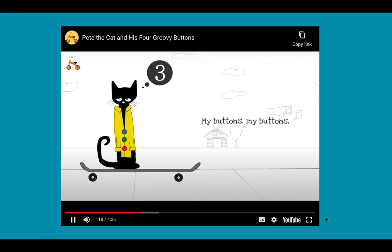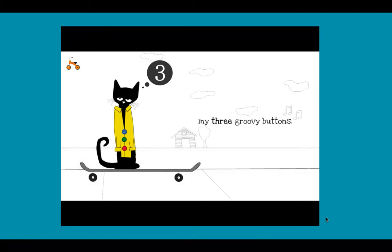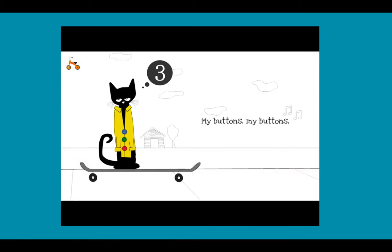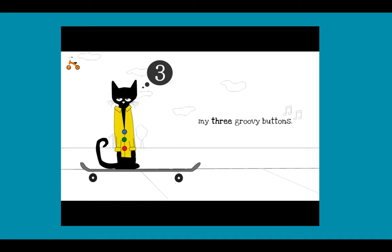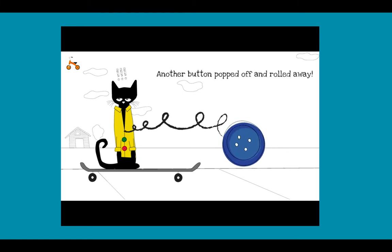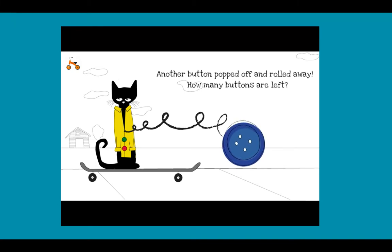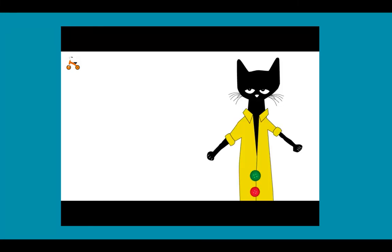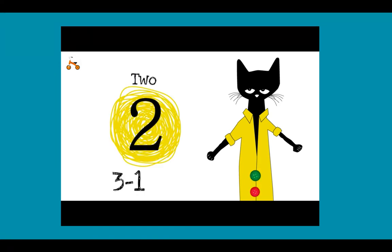My buttons, my buttons, my three groovy buttons. Oh no! Another button popped off and rolled away. How many buttons are left? Two! Three minus one equals two.